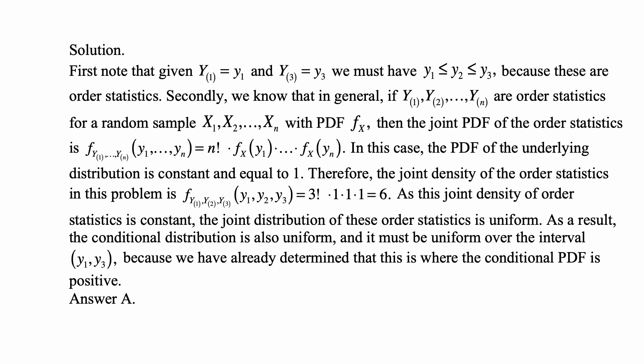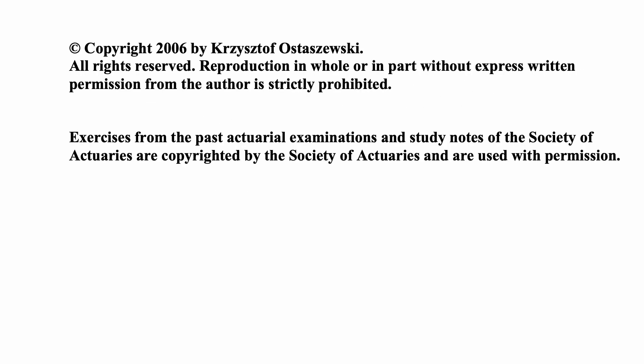y1, y2, y3 through yn are the statistics for a random sample x1 through xn with PDF fx. When that's the case, if these are order statistics, then the joint PDF of the order statistics is f sub y1 through yn of y1 through yn is equal to n factorial times f sub x of y1 times f sub x of y2 and so on.